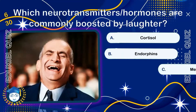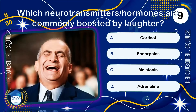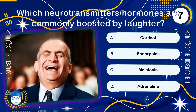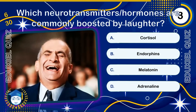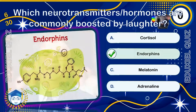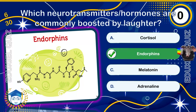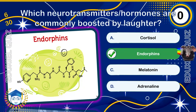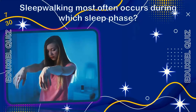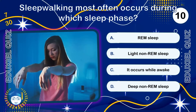Which neurotransmitters or hormones are commonly boosted by laughter? Endorphins are natural opioids produced by the brain that help relieve pain and induce pleasure. They are released during exercise, laughter, or eating chocolate — often described as the 'runner's high.' Their name means 'endogenous morphine.' Sleepwalking most often occurs during which sleep phase?